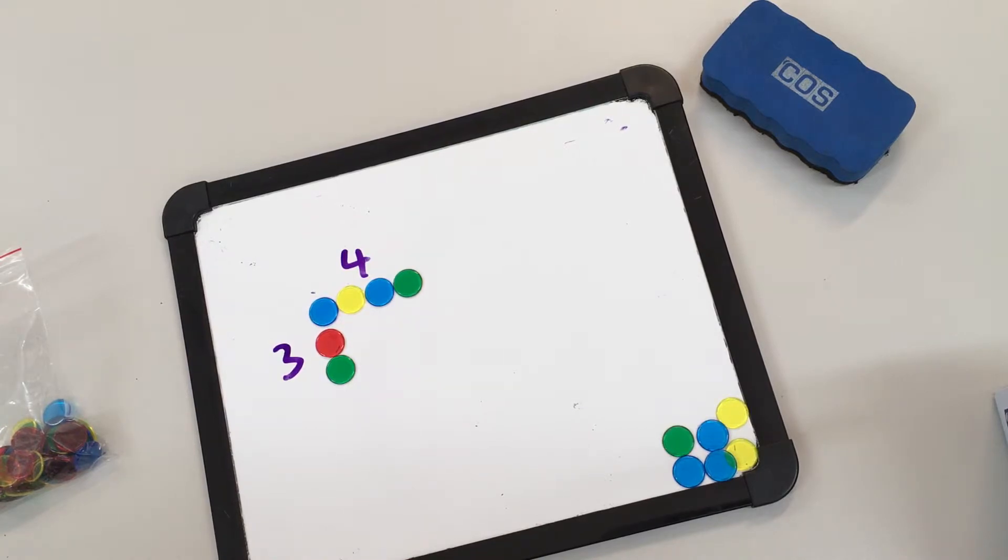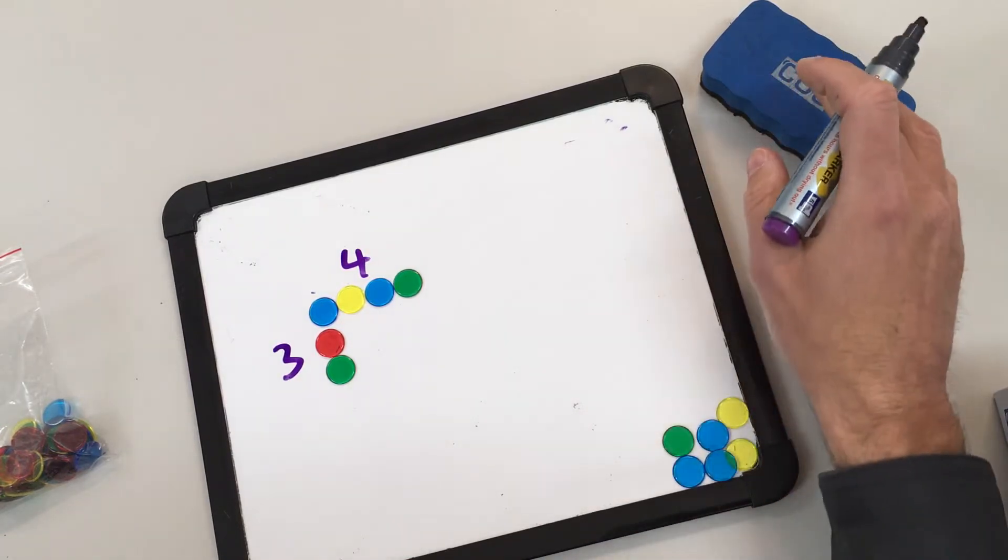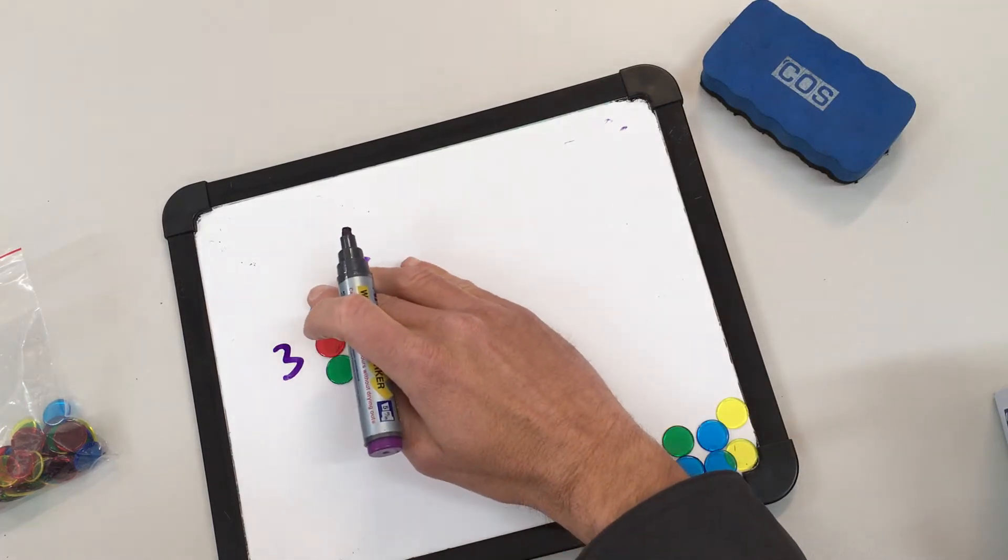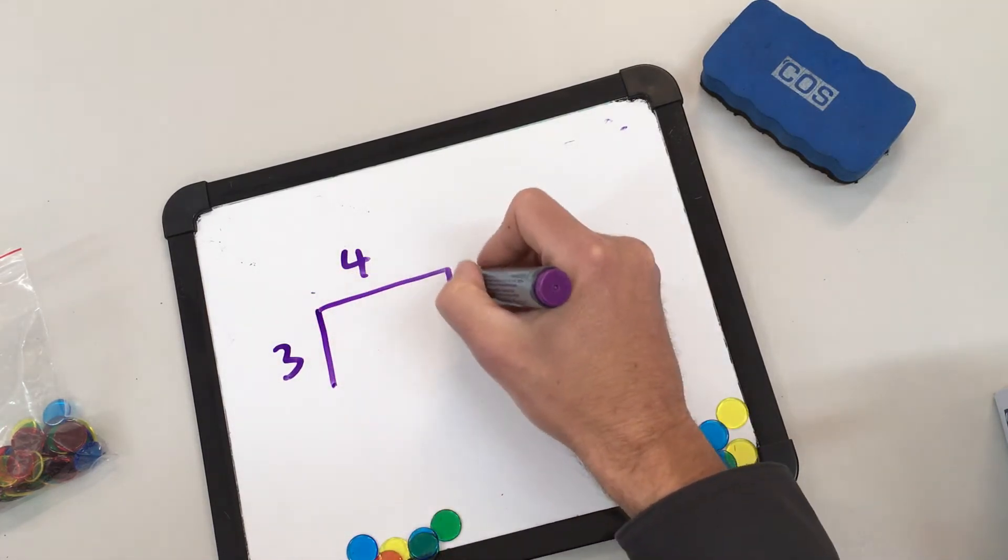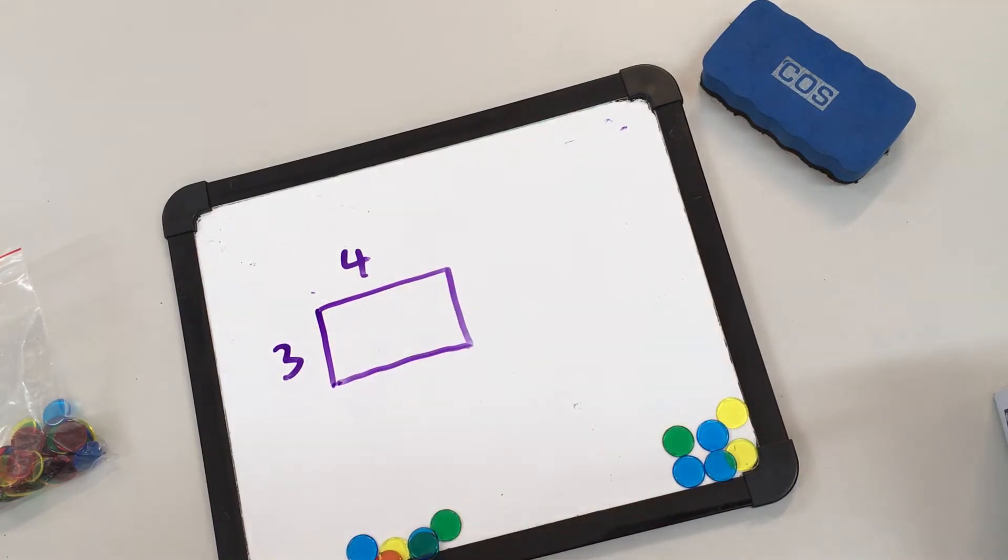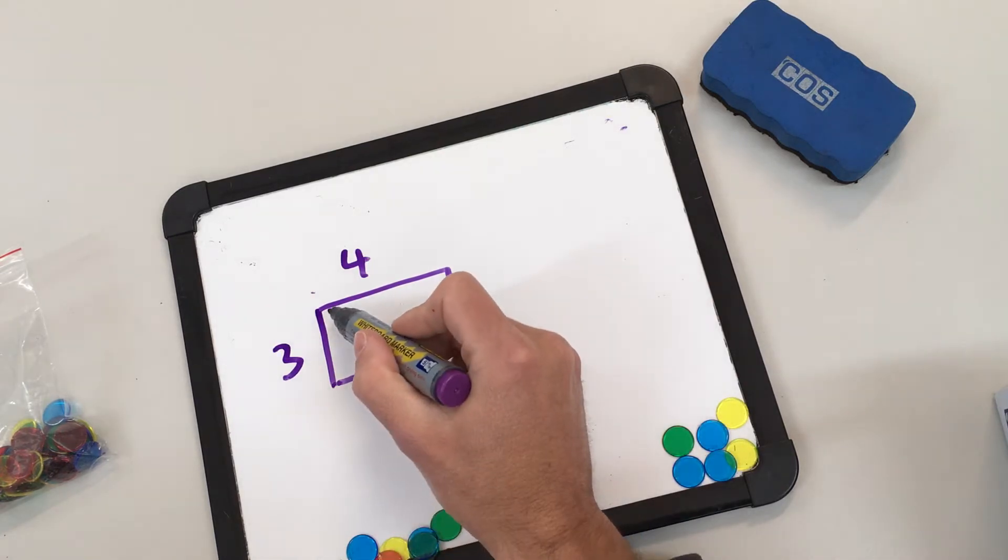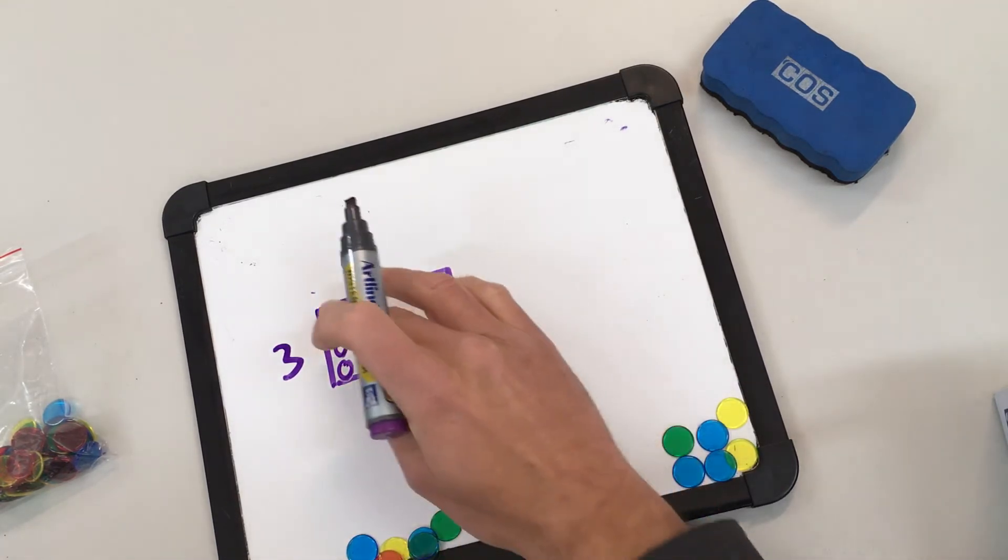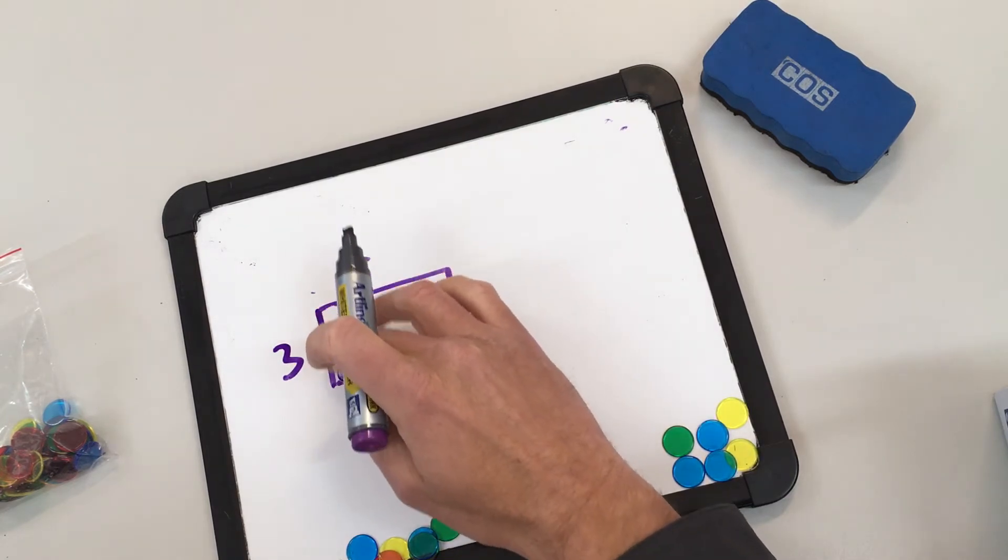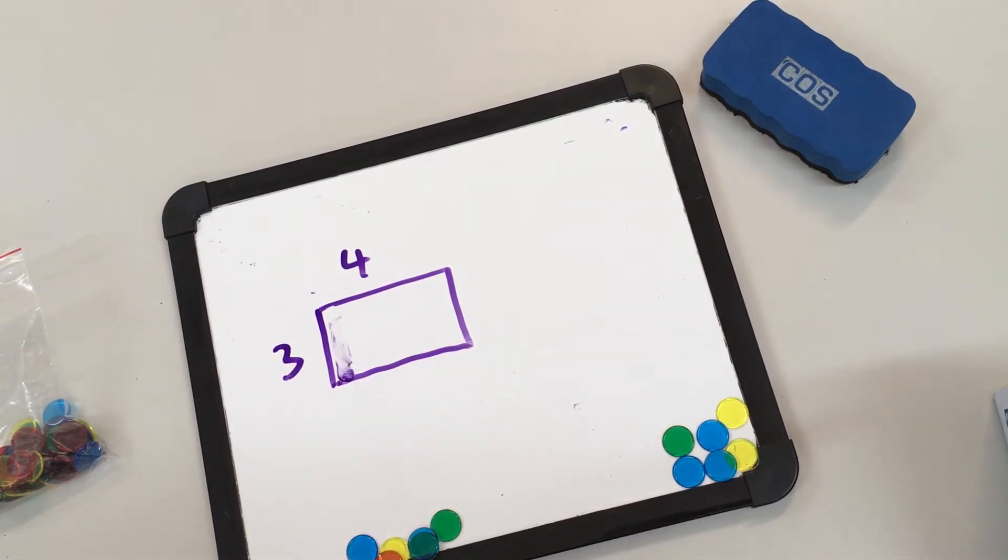The next step is to do an abstract array, and that is when we will take away all of the counters and just say to your child, okay, I've got three rows of four, let's visualize that the counters are in my box. Can you see what they look like? You might have to draw them in to get them started, but then you can easily just erase them to get them on their way.